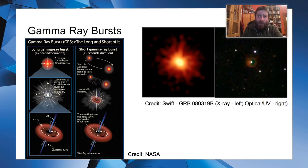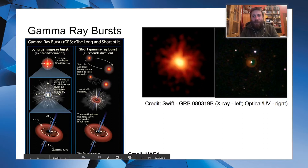GRBs are usually very faint and very fast-fading objects. There is also another type — long GRBs — which are the result of the collapse of a very massive star; there is also a jet there. The short GRB origin is confirmed to be the merging of two neutron stars, at least in some cases.